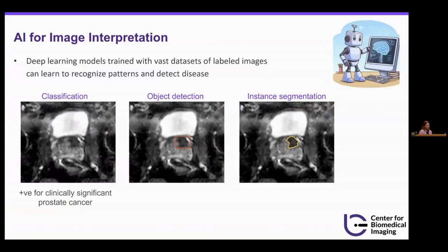Here I'm using prostate MRI as an example. For classification, the task would be to take this image and classify it as having clinically significant prostate cancer or not. For object detection, the goal is to detect and classify a lesion and outline it with a bounding box. And then instance segmentation is an extension of object detection where you're detecting and classifying that object, but also delineating its boundaries.